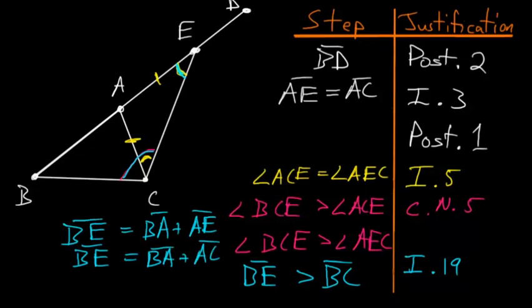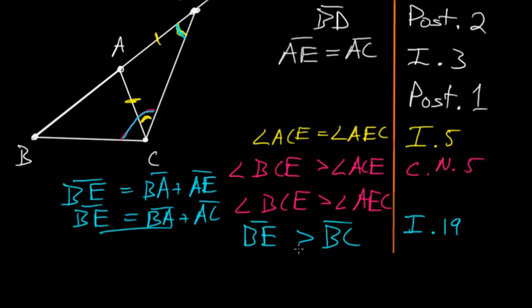And so we can combine all of this information here and here to show that BE, which is composed of these two sides, so BA plus AC is bigger than the line BC. But notice that these three lines are exactly the lines that we started with.